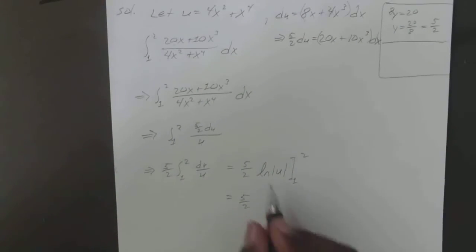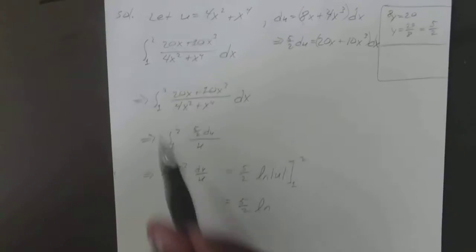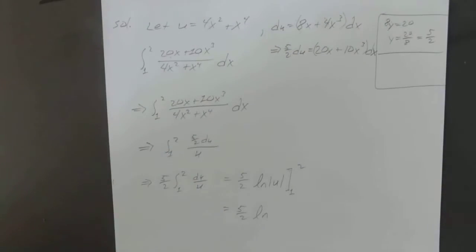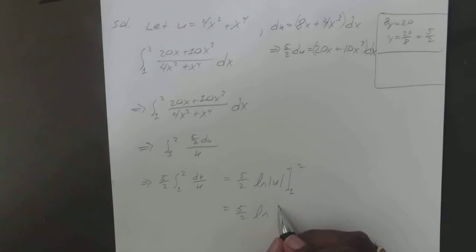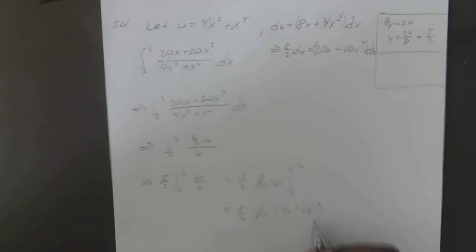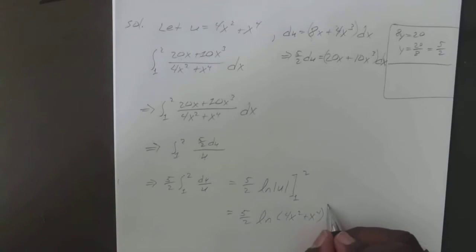So that's going to equal 5 over 2, and we'll convert that back to a function of x, just the natural log. And since 4x squared plus x to the 4th will always be positive, you don't need the absolute value for that one. That is from 1 to 2.